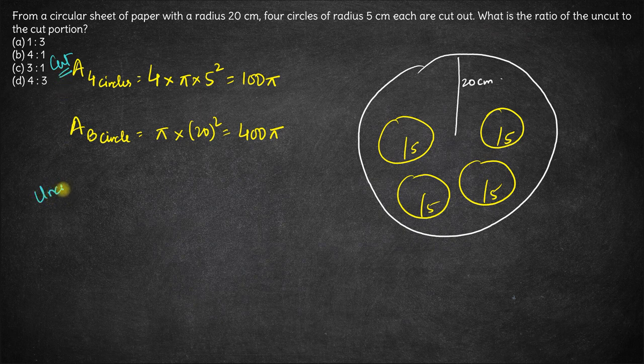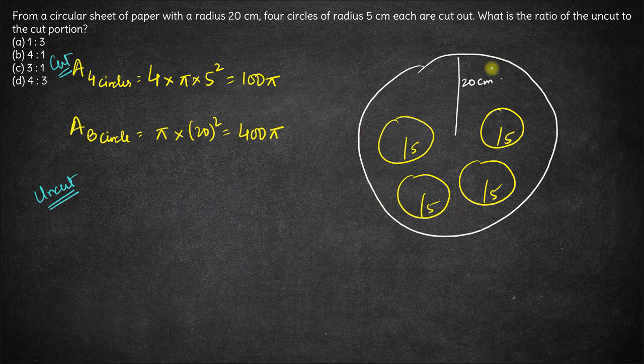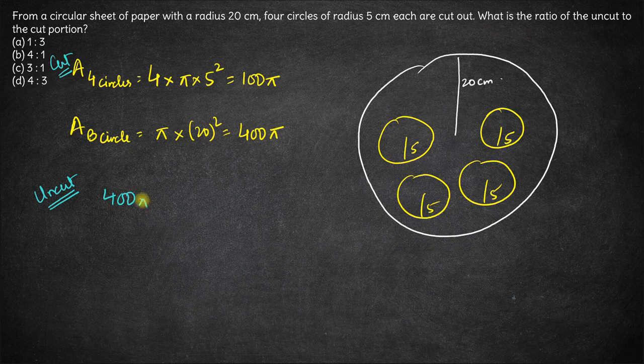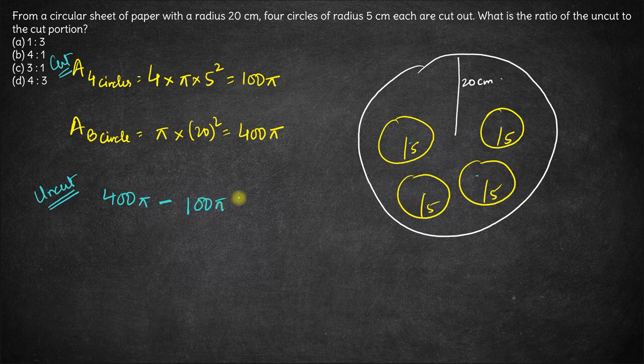What is the area of the uncut portion? The area of the uncut portion will be the total area of the bigger circle minus the area of four circles. So this will be 400π minus the total area of these four circles, which was 100π. So area of the uncut portion is 300π.